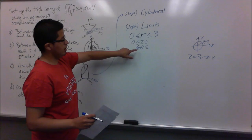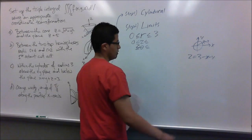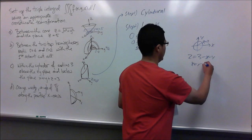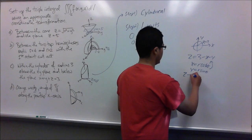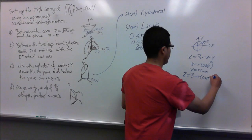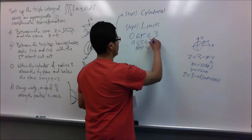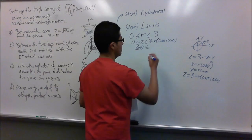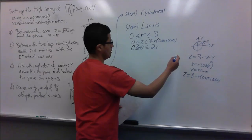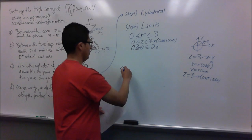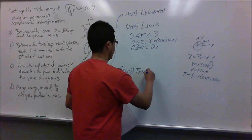In cylindrical coordinates our limits rely on z, r, and theta. Since we have a cylinder of radius 3, drawn in the xy-plane it is just a circle of radius 3, so r goes from 0 to 3. For z, the lower limit is z equals 0 at the bottom, and the upper limit is where the plane intersects. Our plane gives z equals 3 minus x minus y, and using polar substitutions x equals r cosine theta and y equals r sine theta, we get z equals 3 minus r cosine theta minus r sine theta.